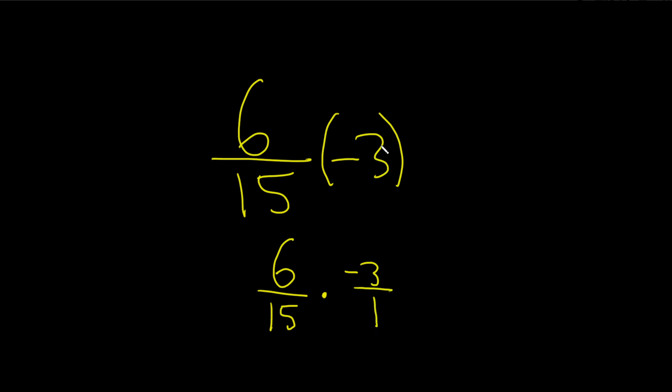Because we can always do that whenever we have a whole number, we can always just divide it by 1 like this. And then we know because one of the fractions is negative, the answer is negative, so I'll go ahead and put the negative sign there.